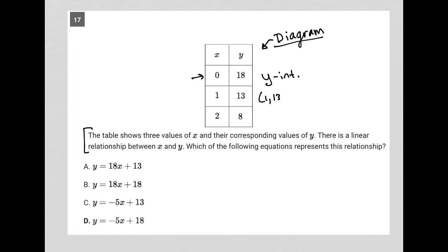Then, of course, I have these other points, 1, 13, and 2, 8 as well. The question says the table shows three values of x and their corresponding values of y. There is a linear relationship.